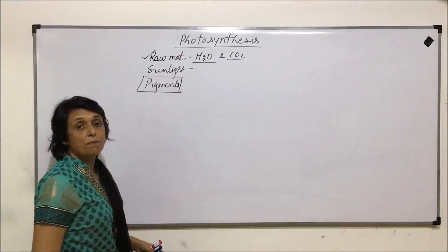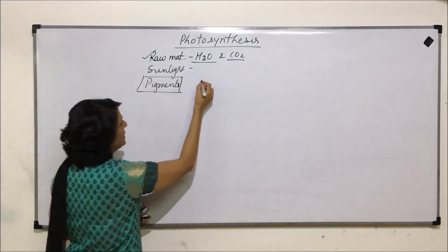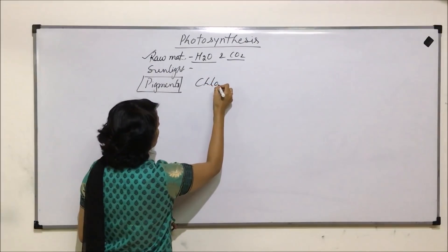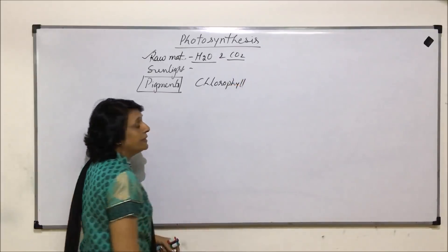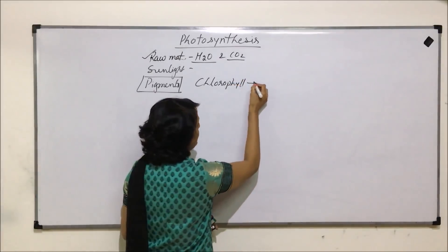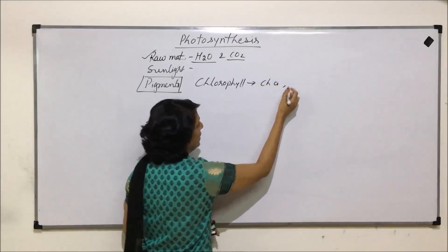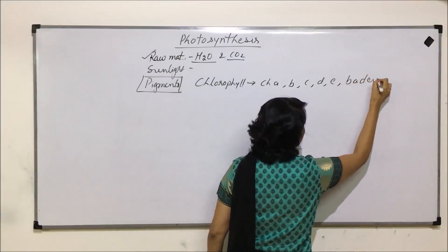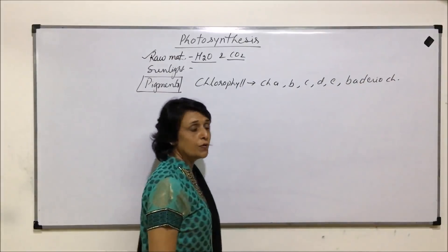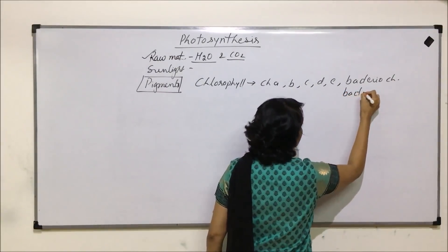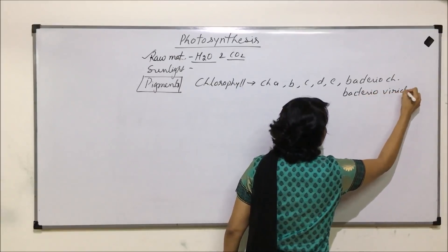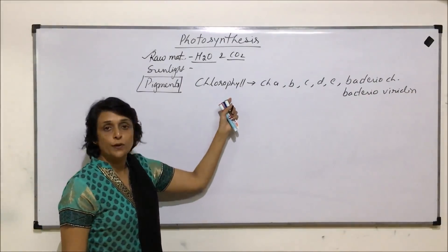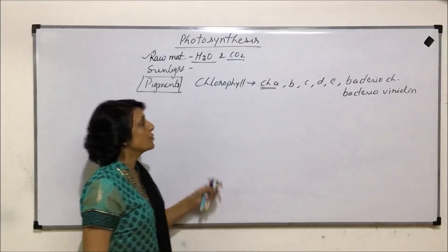When we say pigments, let us first write down their names. There is chlorophyll, which is the most important, and these chlorophylls are of various types: chlorophyll A, B, C, D, E, bacteriochlorophyll, and bacterioviridin — that means there are seven different types of chlorophylls.